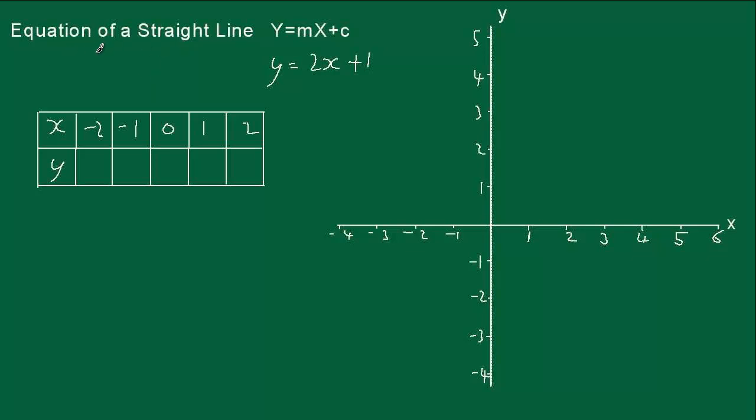Okay, this is an introduction to the equation of a straight line, and this is the normal formula for it: y equals mx plus c. I've got an example here, y equals 2x plus 1, so the m in this case is 2 and the c is 1.